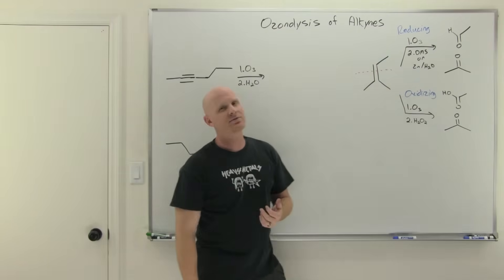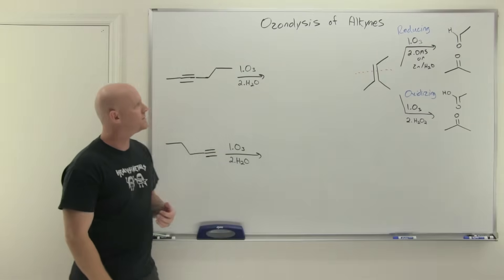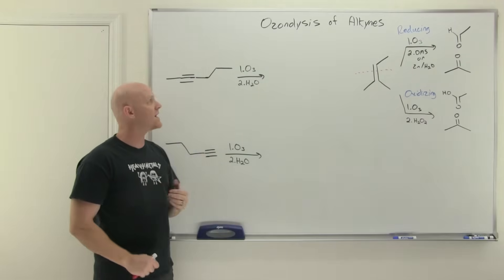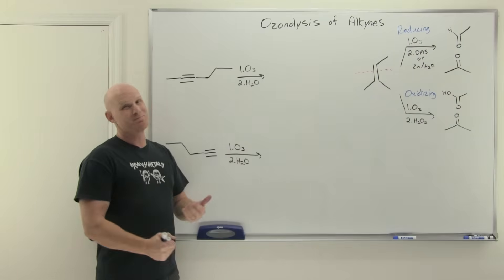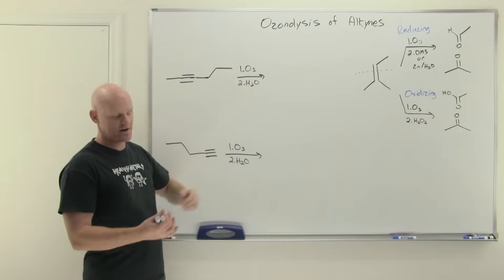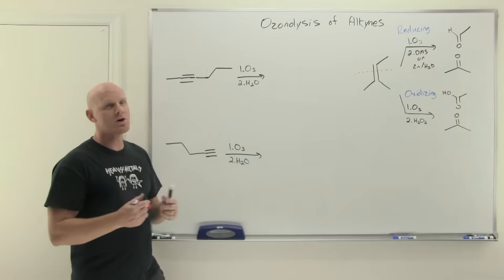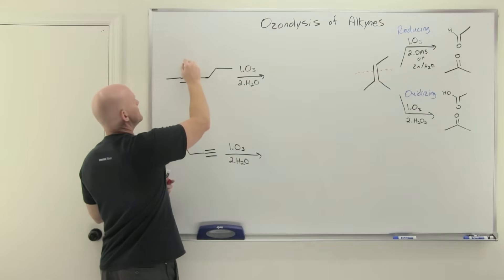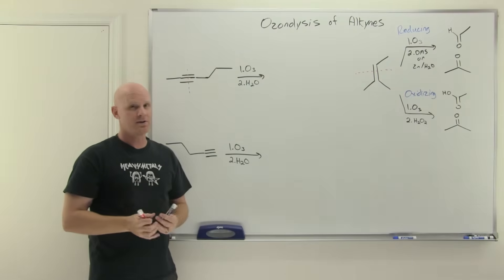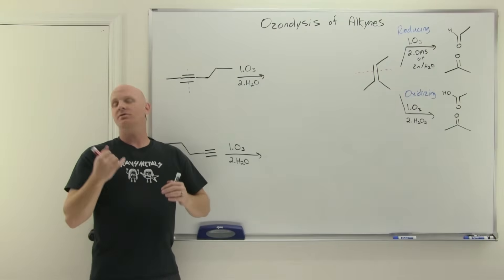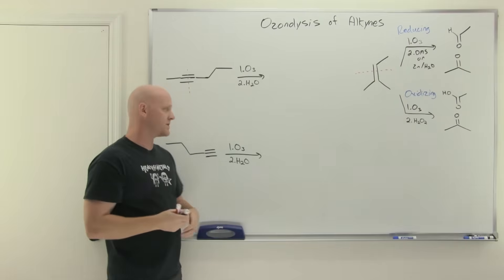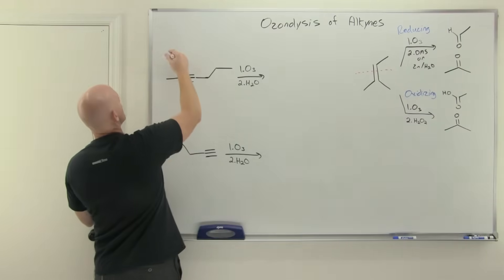With alkynes, that second step is going to be a little bit different. We only ever do ozonolysis of an alkyne under oxidizing conditions, but it's not peroxide — we just use water, which is all that's necessary. It's the same overall process for predicting products: instead of cleaving a carbon-carbon double bond, you're going to cleave a carbon-carbon triple bond. And you are never going to get a ketone or an aldehyde — you're going to get carboxylic acids, largely. We'll look at this in two contexts, starting with an internal alkyne.